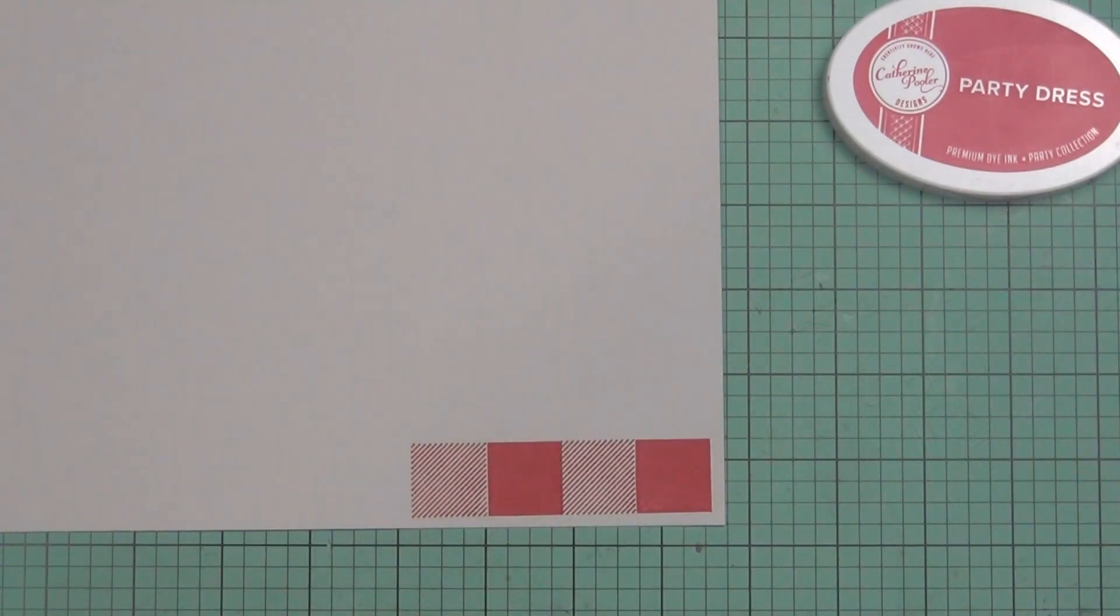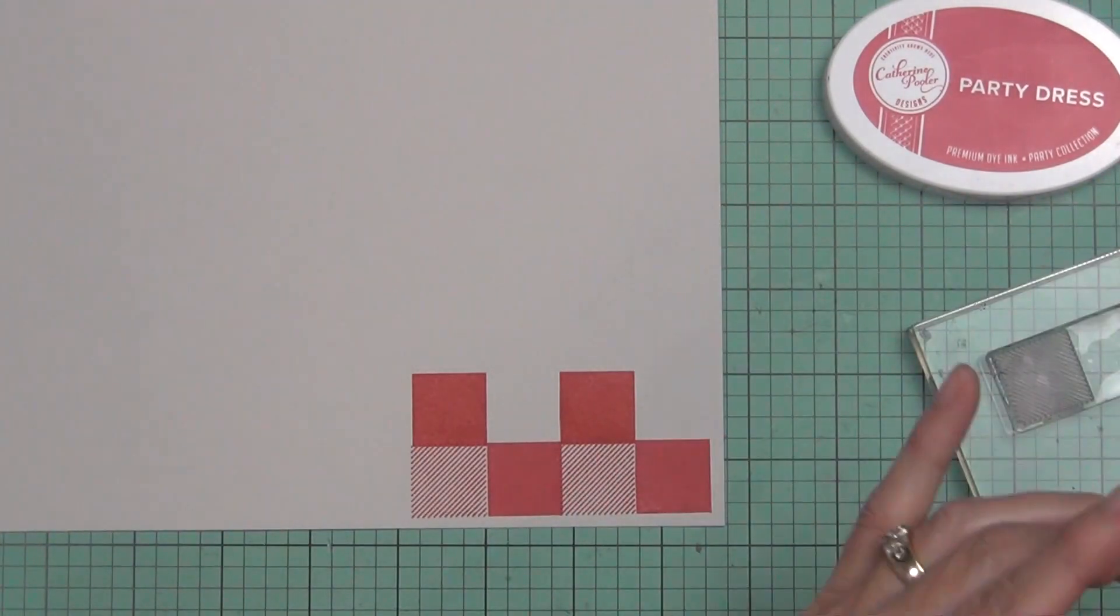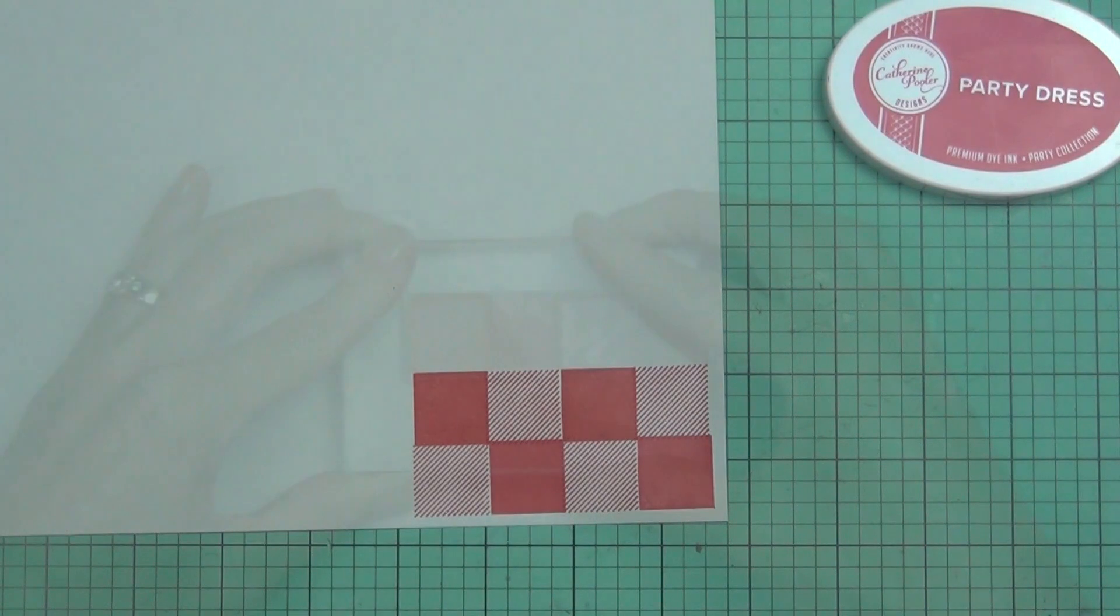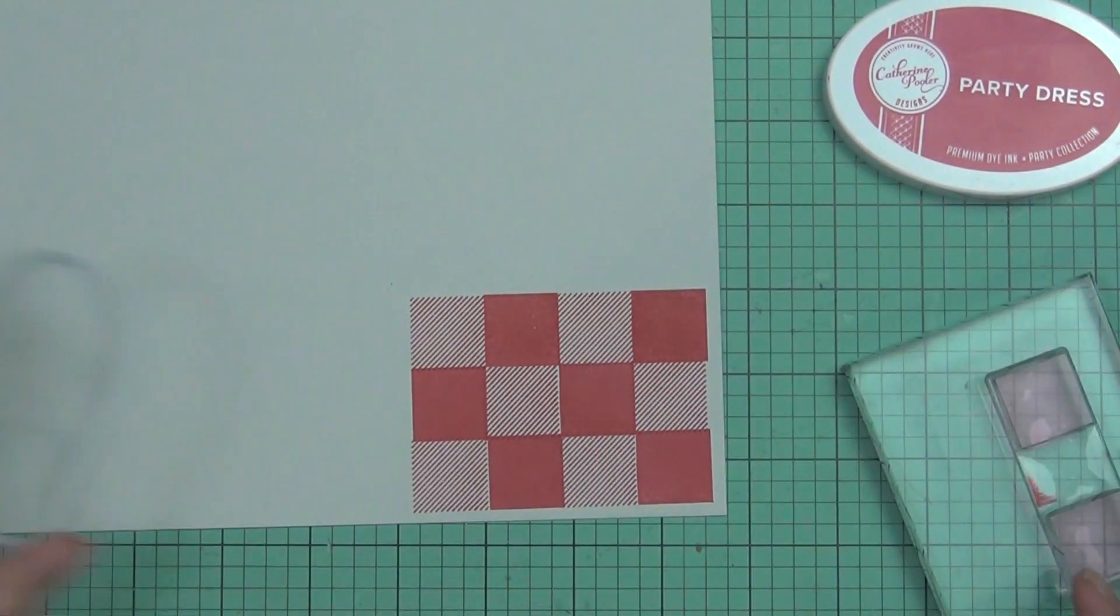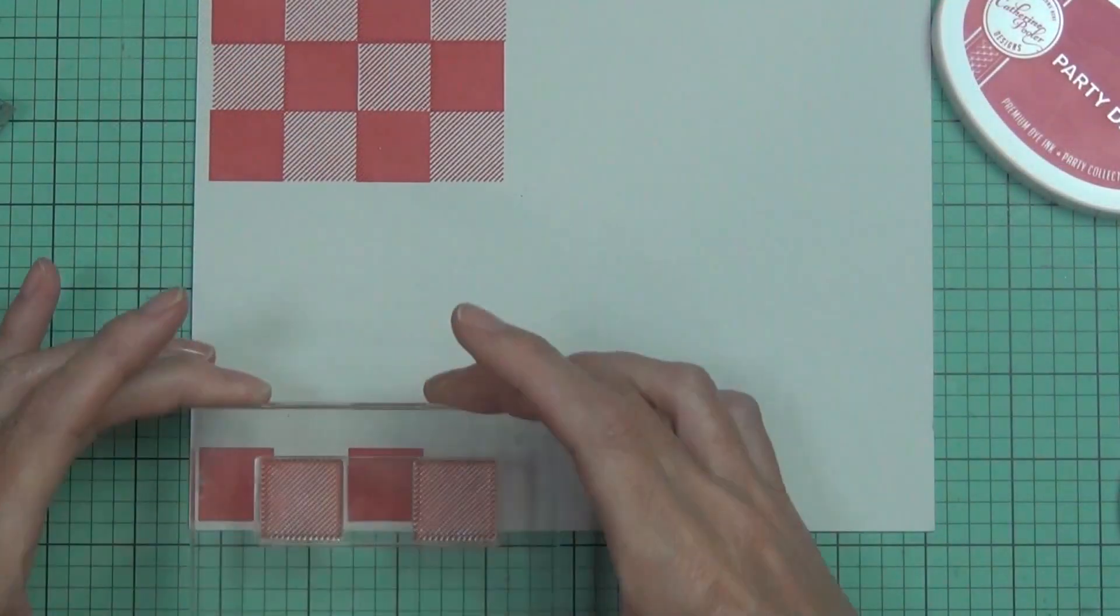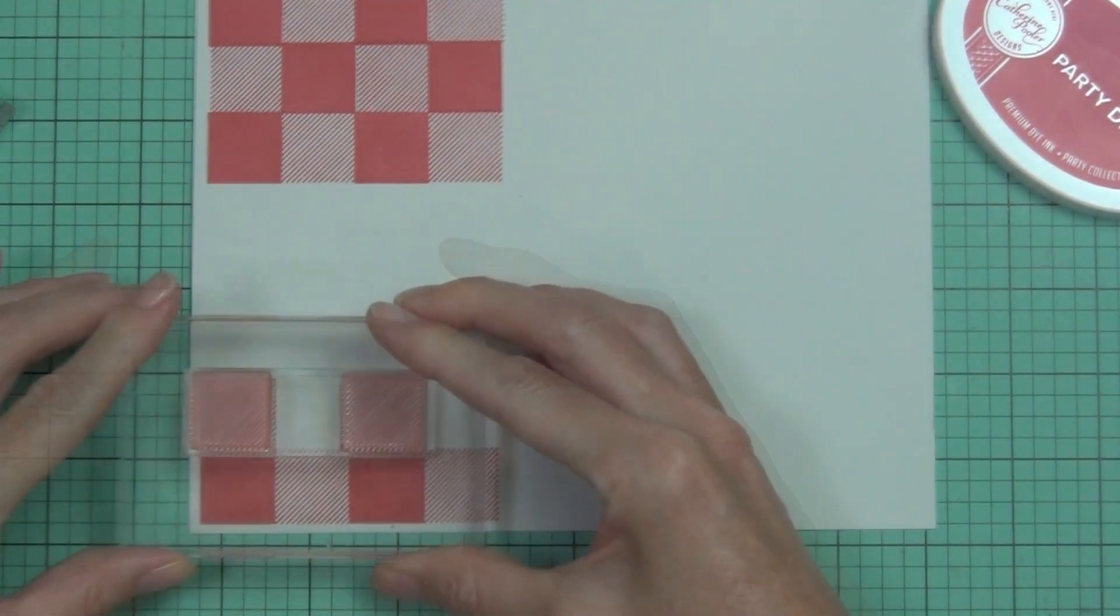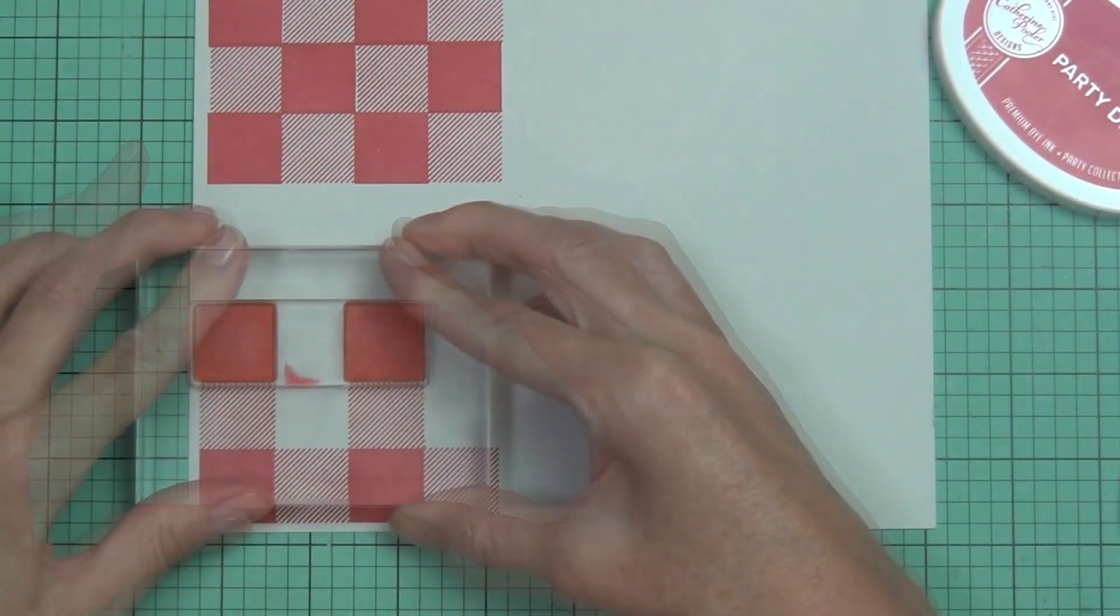The stamp that I'm using—there's a few different ones in the set, I just used two of them—you can stamp two squares at once and you can use them in all different ways. So you can make your patterns as busy or as clean and simple as you like.